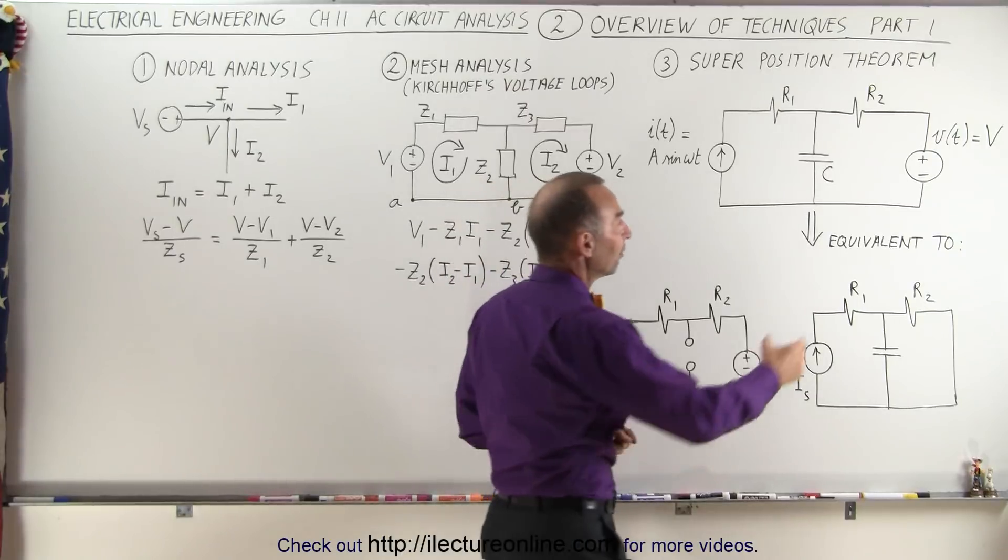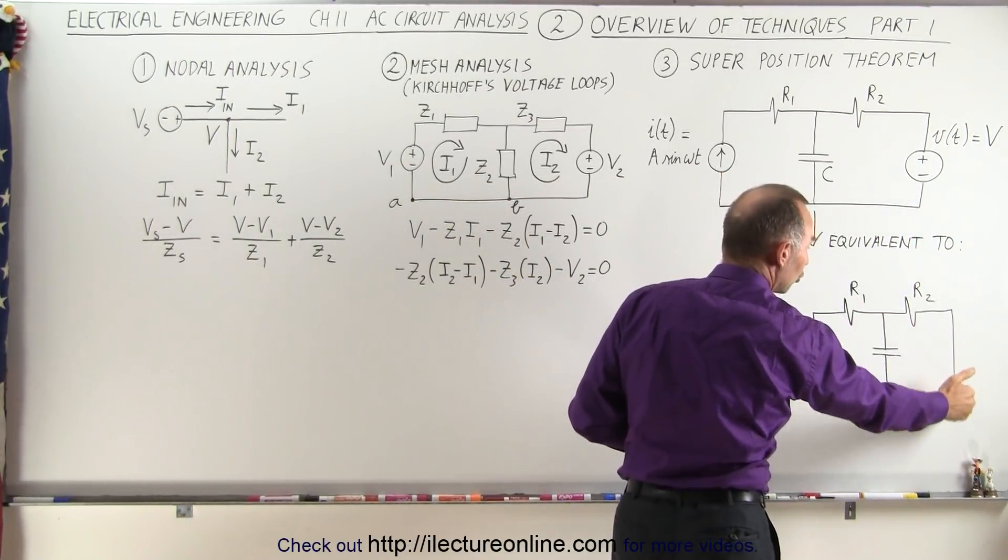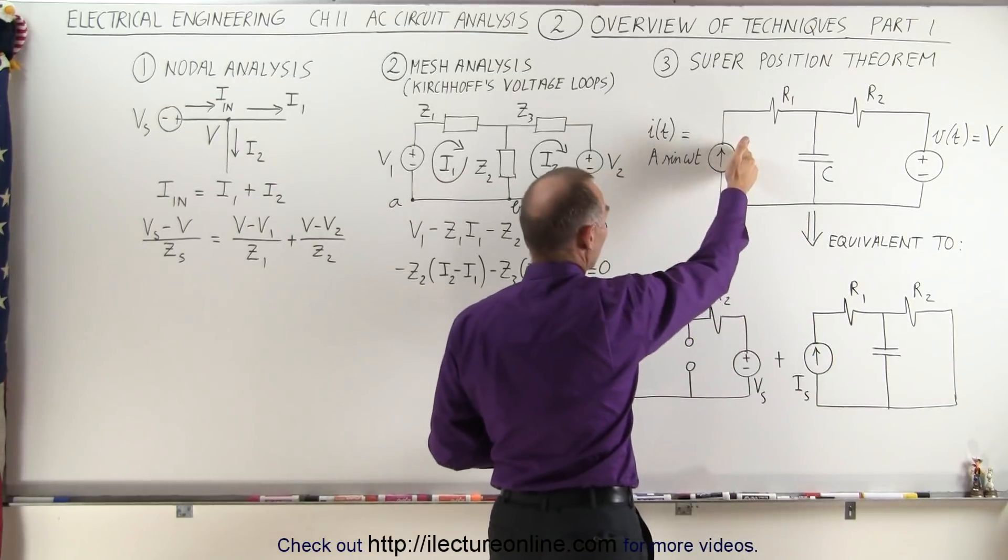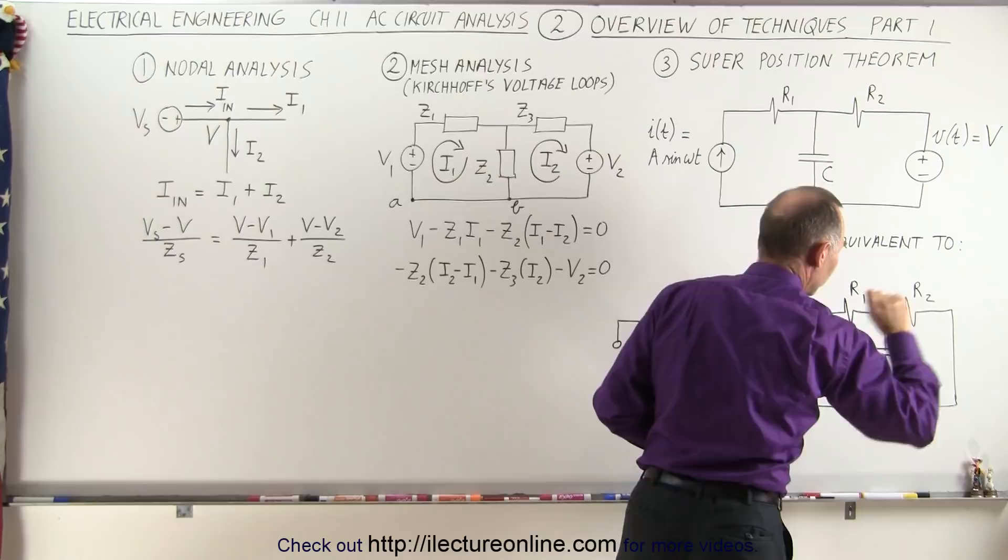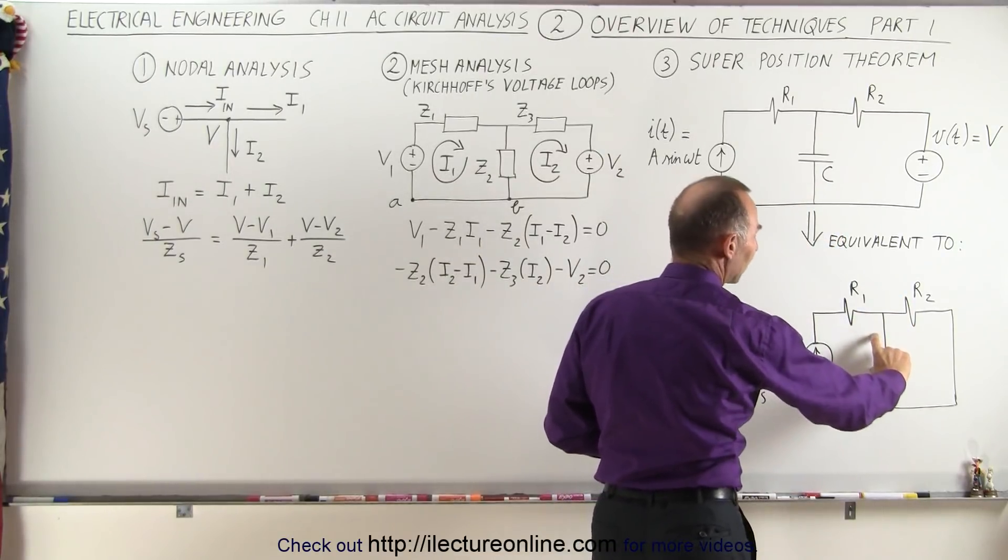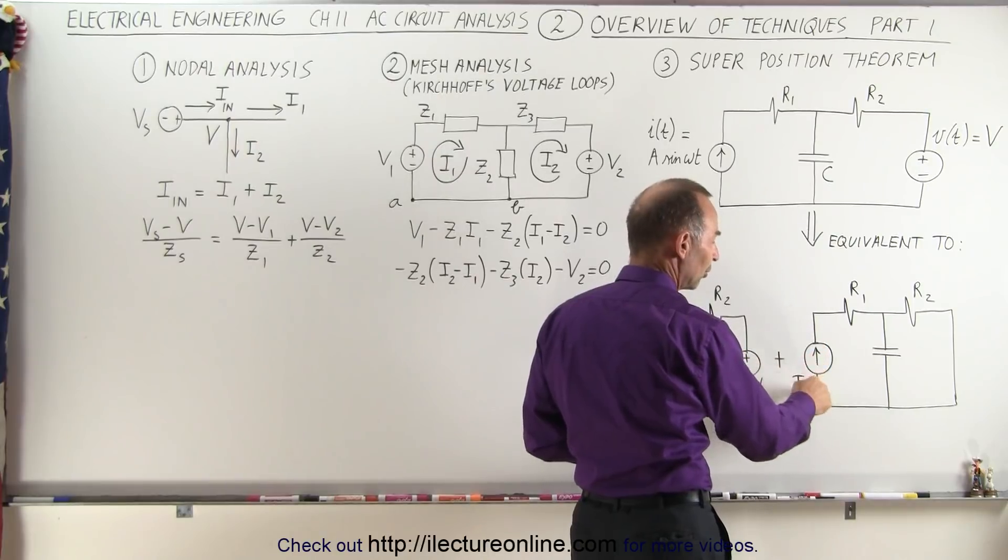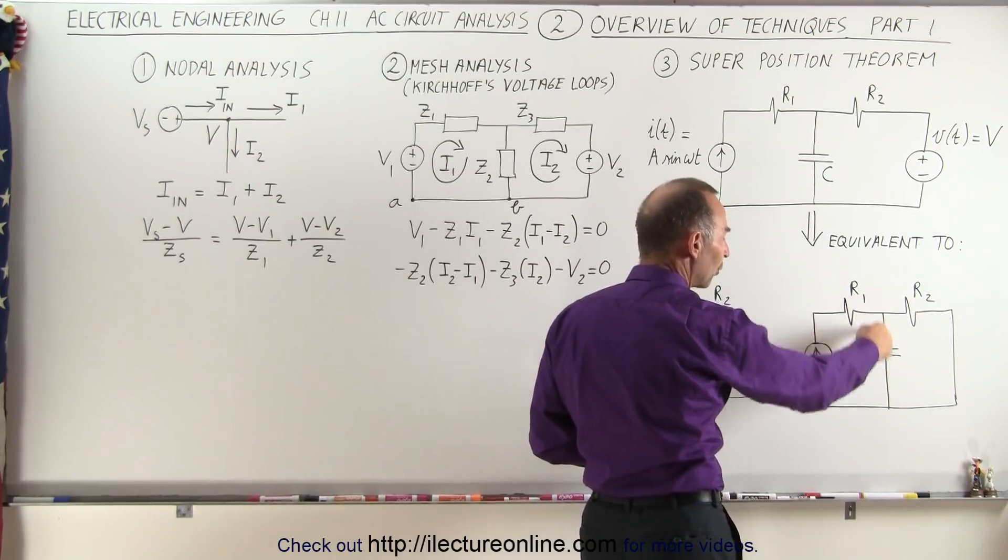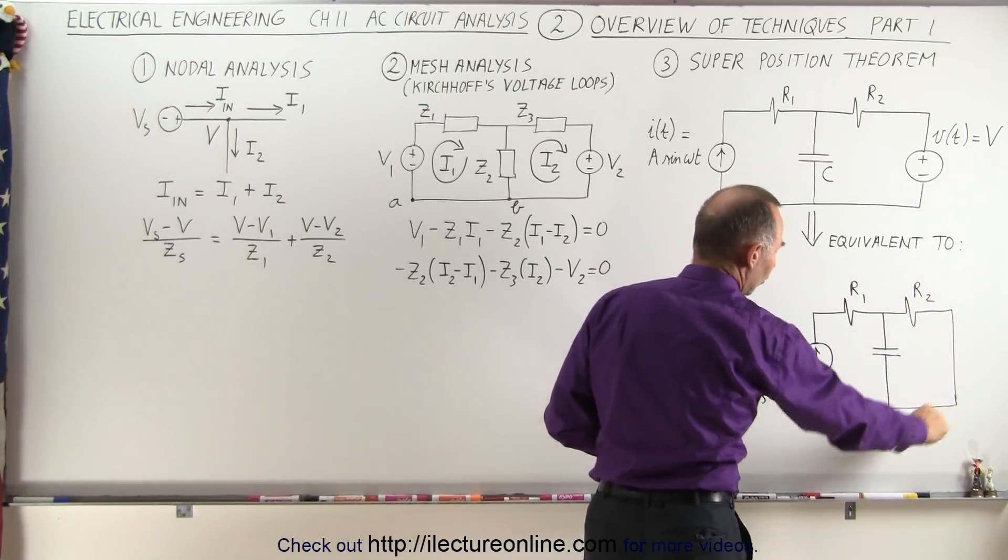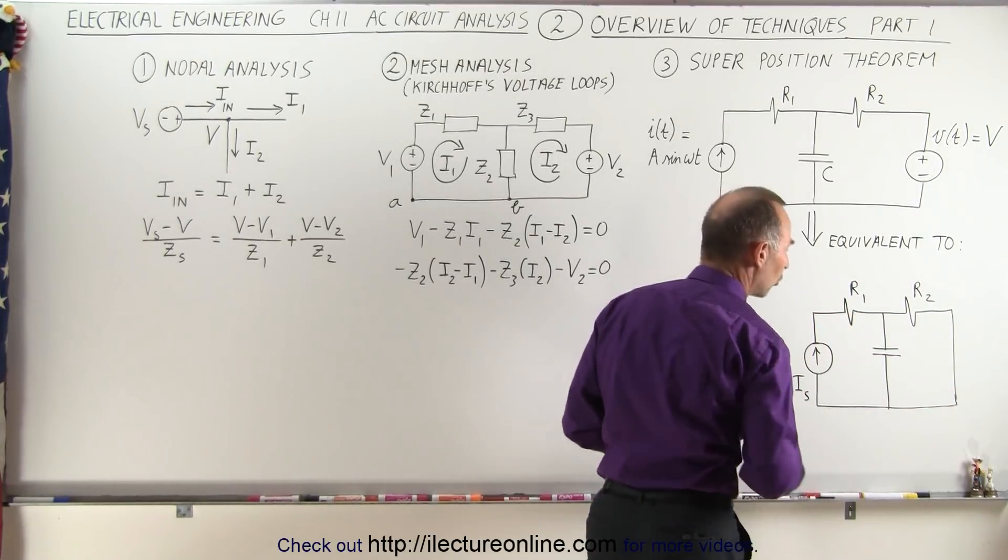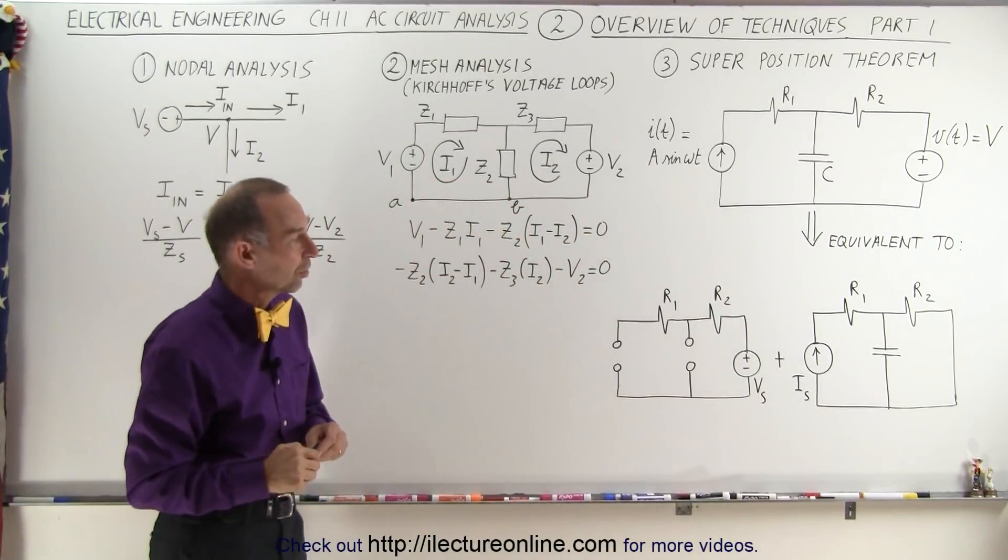When we remove the voltage source, instead of the voltage source we have a short circuit. When we remove the current source, we have an open circuit. The capacitor stays because if the current source is not a DC current but an alternating current, then we're going to have current flowing in and out of the capacitor. This is what the circuit will look like with only a current source. These are the basic rules we follow when we have the superposition theorem.